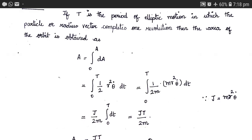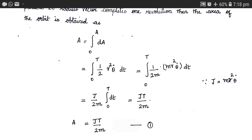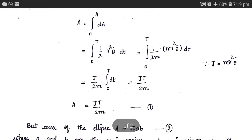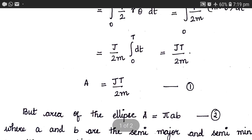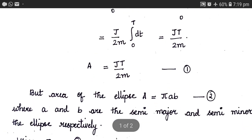To get A, let us integrate between the limits 0 to T: half r squared theta dot dt. For convenience, we multiply by m in the numerator and divide by m in the denominator, which brings no change. We know that m r squared theta dot is nothing but the angular momentum J. Substituting, we get J over 2m times the integral from 0 to T of dt. Integrating this, and applying the limits, we get A equals JT divided by 2m.